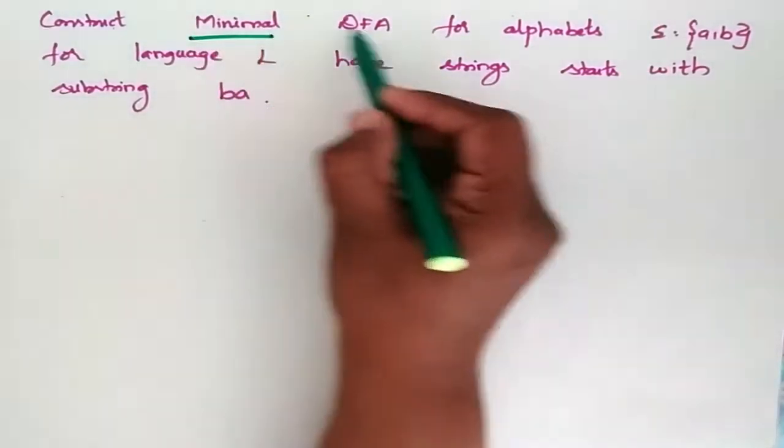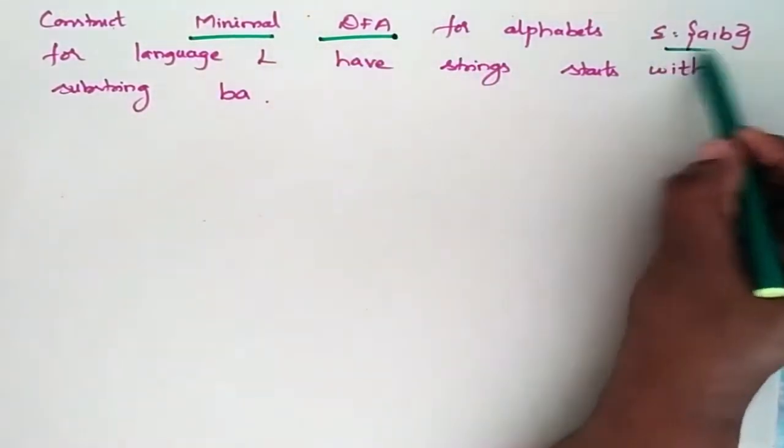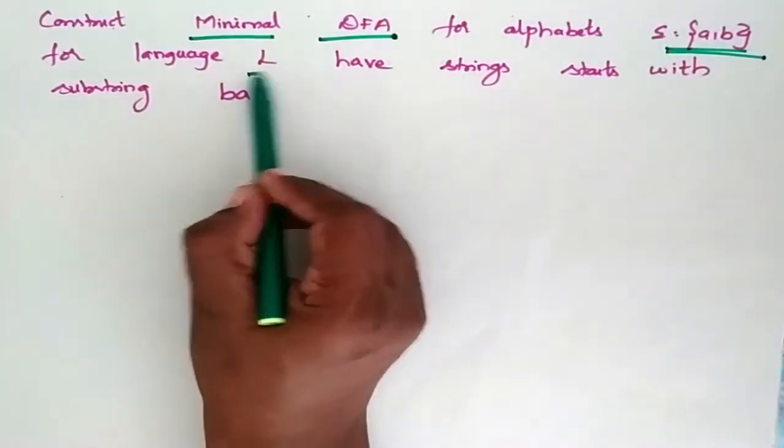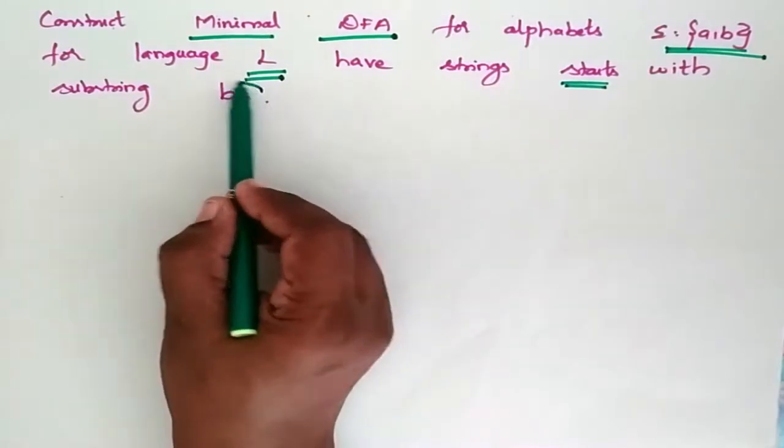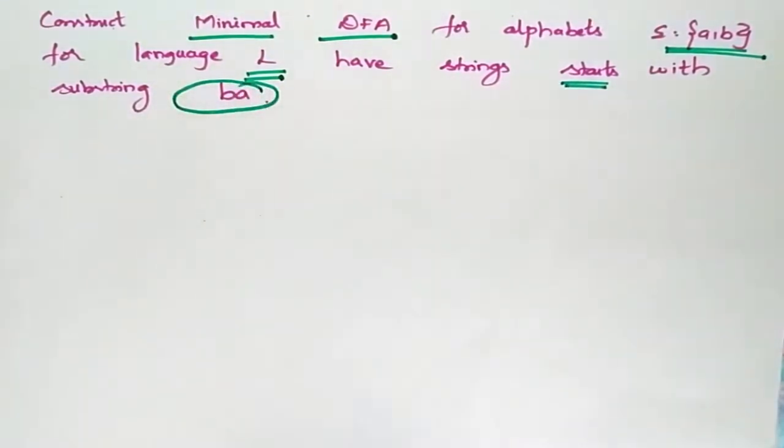Construct minimal DFA for alphabets A and B for language L which has strings that start with BA, substring BA.